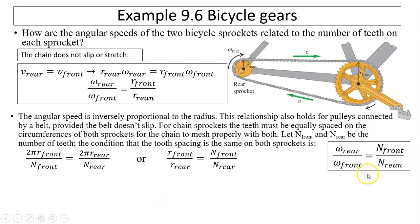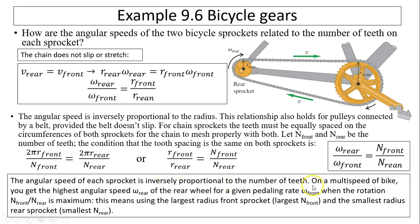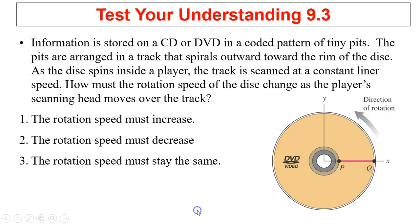We know R_front over R_rear equals omega_rear over omega_front. So omega_rear over omega_front equals number of teeth in the front over number of teeth in the rear. This is the same relationship, right? So the more teeth you have, the slower you're rotating. The less teeth you have, you have to rotate faster so you can match up with the front. The angular speed of each sprocket is inversely proportional to the number of teeth. On a multiple-speed bike, you get the highest angular speed omega_rear of the rear wheel for a given pedaling rate omega_front when N_front over N_rear is maximum. This is the gear proportion. This means using the largest radius front sprocket and the smallest radius rear sprocket to make the fastest speed.